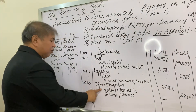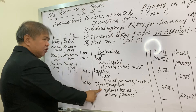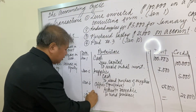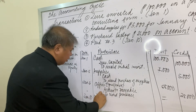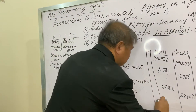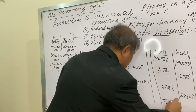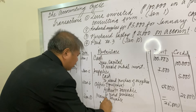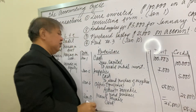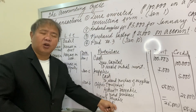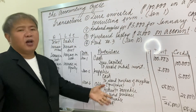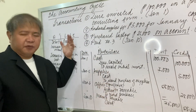For January 10: the liability is being settled, so accounts payable decreases — a decrease in liability is a debit, so debit Accounts Payable for 25,000 pesos. Cash was used to make the payment — a decrease in asset is a credit, so credit Cash for 25,000 pesos. Description: 'To record payment of liability.'